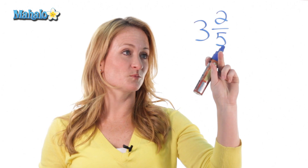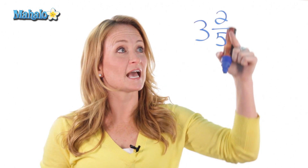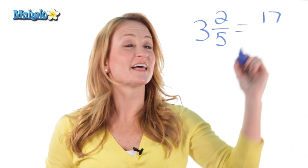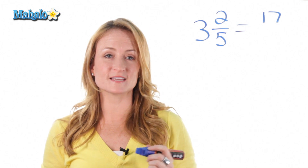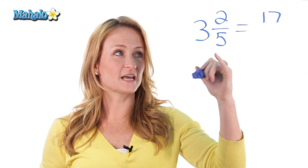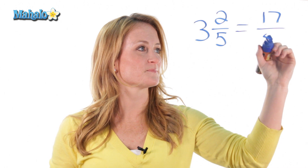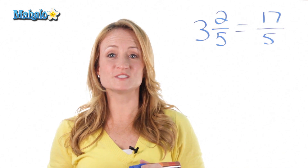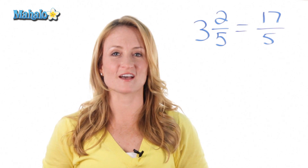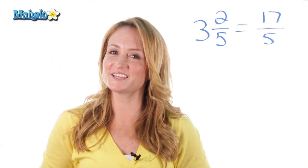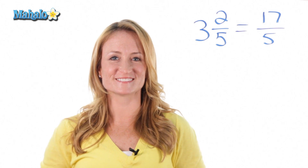So for this one, we would multiply 5 times 3 is 15, and add the 2. 15 plus 2 is 17. That number goes on top, and your denominator stays the same. So 3 and 2 fifths turned into a fraction is 17 over 5, and that's how you turn a mixed number into a fraction.